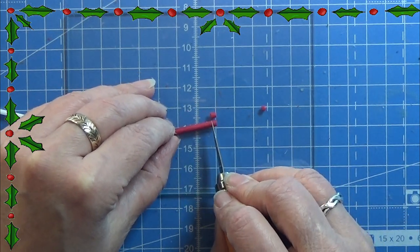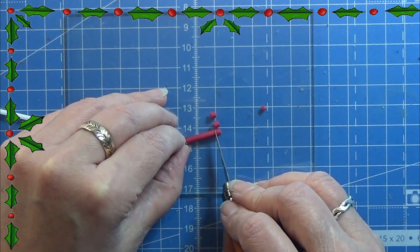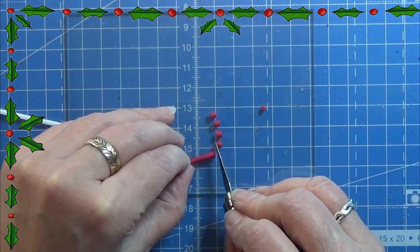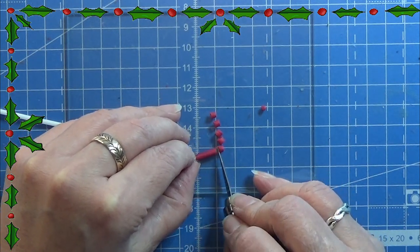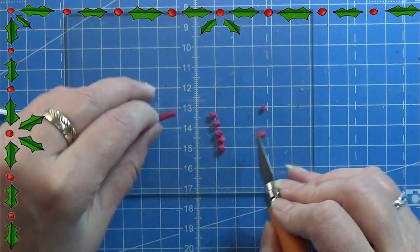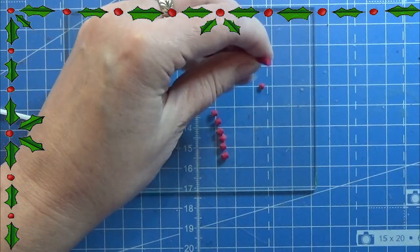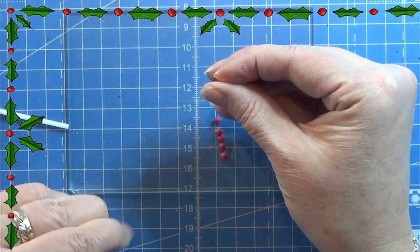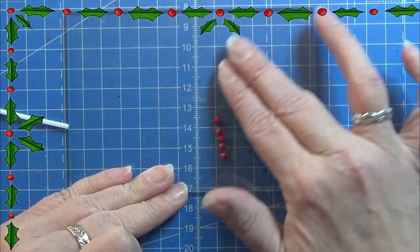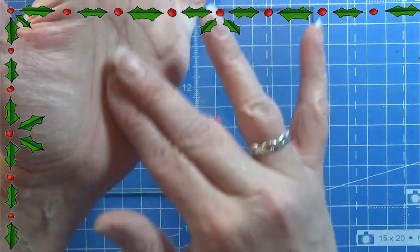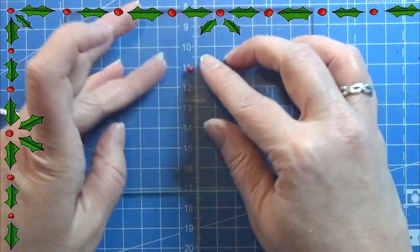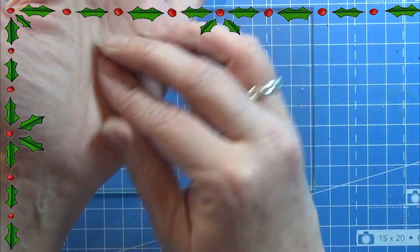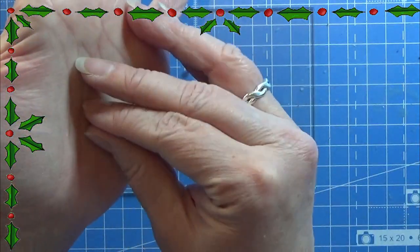For this I am going to roll out my red clay into a snake and I'm just cutting off three equal sizes of this snake for each of the candle holders that I want to make. I'm going to make two of them, so six pieces for me. Then I am going to roll them into small balls and I'm using three as I said for each of these candles.